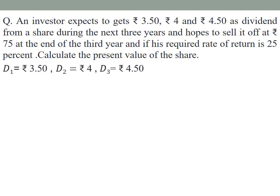The given values are: D1, the first year dividend, is Rs. 3.50. D2 is Rs. 4.00. D3 is Rs. 4.50. At the end of the 3rd year, the selling price Pn is Rs. 75. The discount rate — the expected rate of return — is 25%, which equals 0.25.